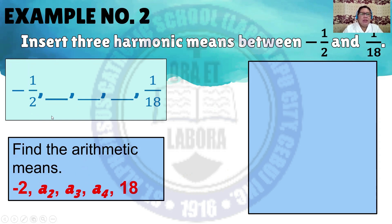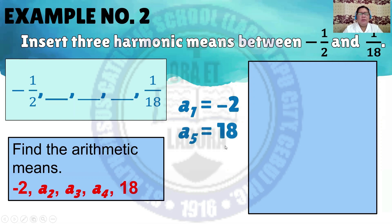In finding the arithmetic means, identify the denominators: the first denominator is negative 2, and the 5th term is 18. We need to find A sub 2, A sub 3, and A sub 4. So A sub 1 is negative 2, A sub 5 is 18, and N is equal to 5 because there are 5 terms. We need to find the common difference, represented by D.